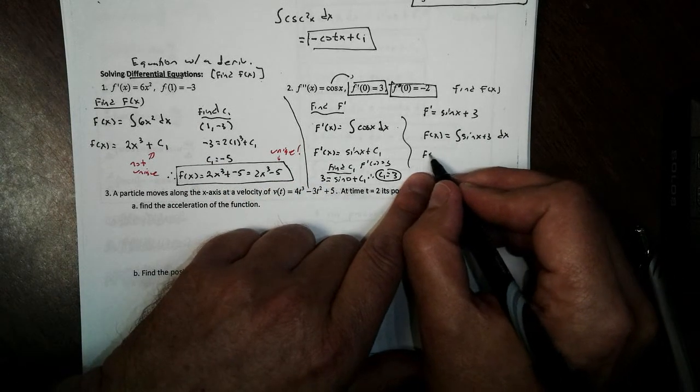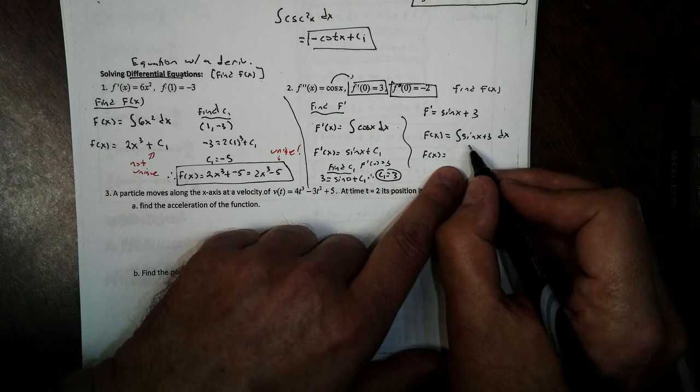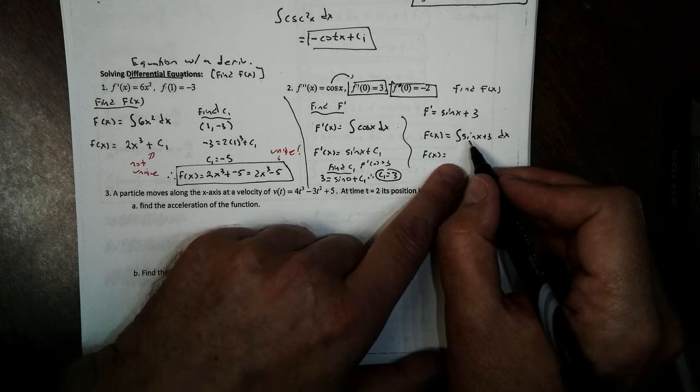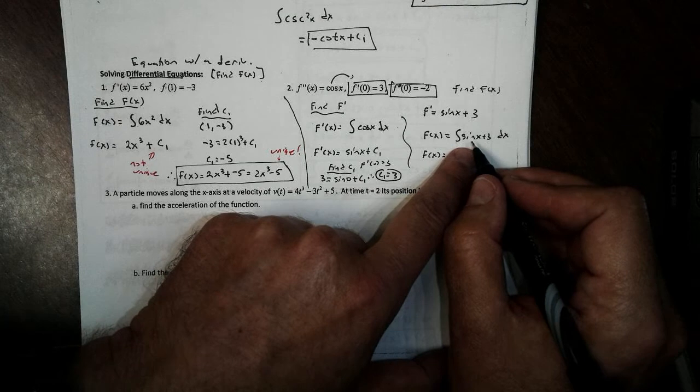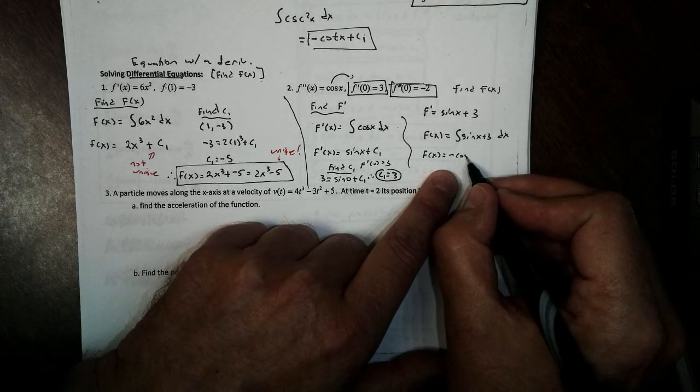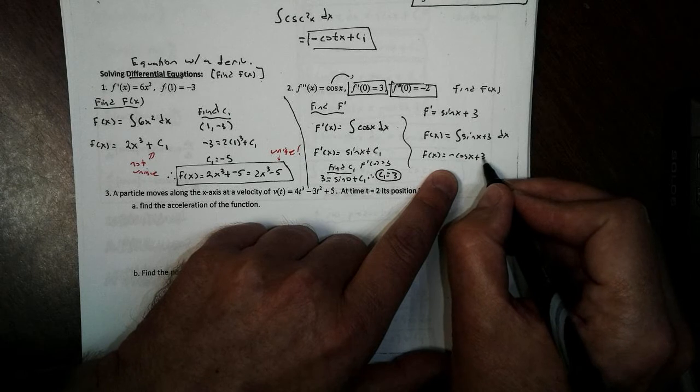When we integrate this one, the antiderivative of sine, remember, cosine's derivative is negative sine. So going backwards, the antiderivative of sine is going to be negative cosine of x plus 3x.